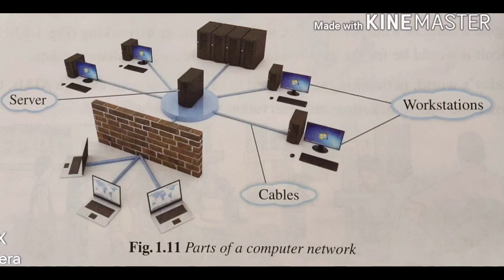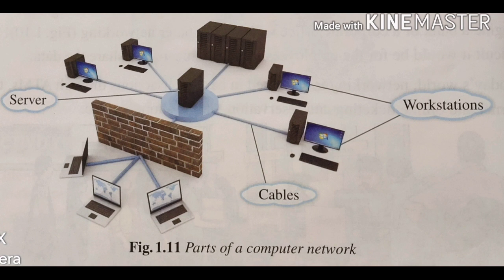The next topic is parts of a computer network. We have various different parts that create a network and we are going to take them one by one. The first part is called workstations. Workstations are every single computer in the network, also called a node. The users can be using a smartphone, a computer, laptop, or desktop — all are considered as workstations.